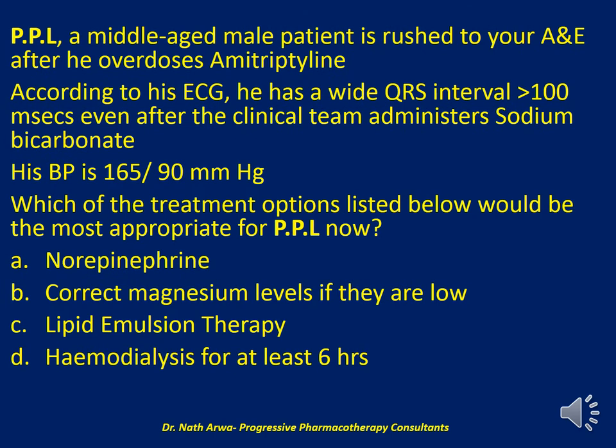The next question reads: Mr. PPL, a middle-aged male, is rushed to the accident and emergency department after overdosing on amitriptyline. His EKG shows a wide QRS exceeding 100 milliseconds even after sodium bicarbonate is administered. His blood pressure is 165/90 mmHg. My question: which treatment option is most appropriate? Would you administer norepinephrine? Correct magnesium levels if low? Use lipid emulsion therapy? Or settle for hemodialysis for at least six hours? I'll give you 10 seconds.